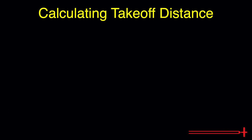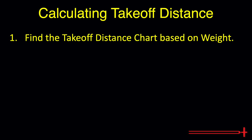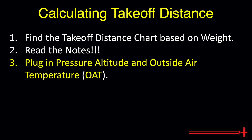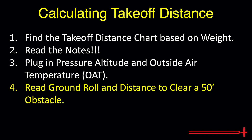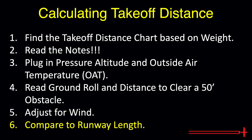To recap, the steps necessary to determine takeoff distances for the Cessna 172 are as follows. Step 1: find the takeoff distance chart based on expected aircraft weight. Step 2: read the notes. Step 3: plug in pressure altitude and outside air temperature. Step 4: read the matching ground roll and 50-foot obstacle clearance distances. Step 5: adjust those distances for wind. And Step 6: compare these distances to available runway length.